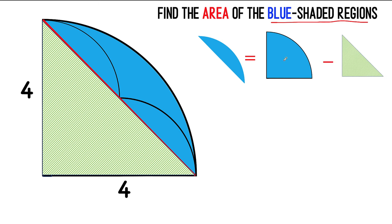And if we can find the area of the quarter circle, and we can find the area of this right triangle, then we have the answer to our problem. So let's do that.